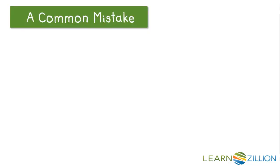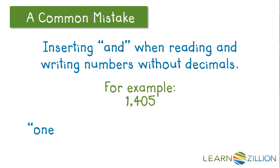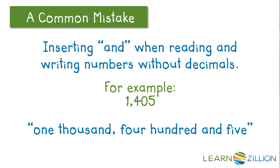Another common mistake is inserting 'and' when reading and writing numbers without decimals. For example, 1,405 is sometimes spoken as 'one thousand four hundred and five.' We need to delete the 'and' because it implies that we have a decimal or part of a whole.